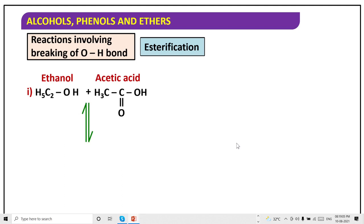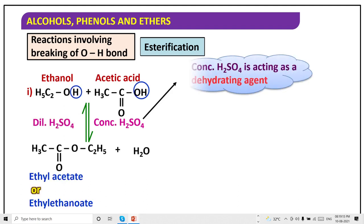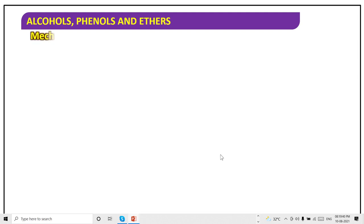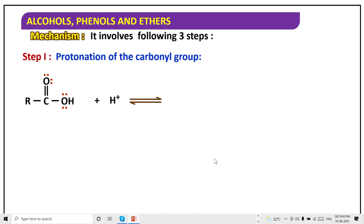Now let's talk about the esterification reaction. Here alcohol gives the H and acetic acid gives the OH. Sulfuric acid acts like a dehydrating agent. The reaction is reversible in nature. There is an irreversible method using SOCl₂. That favors the reaction.